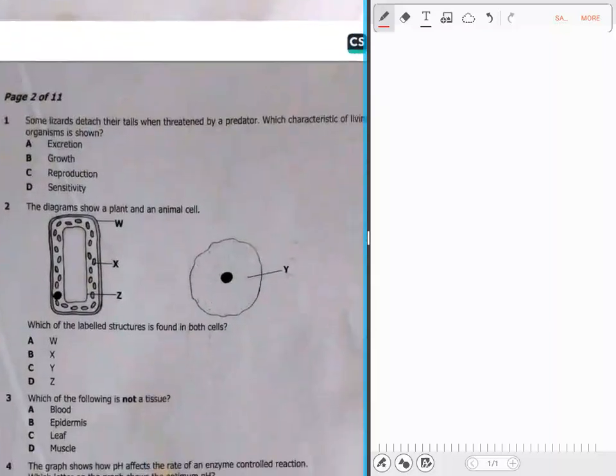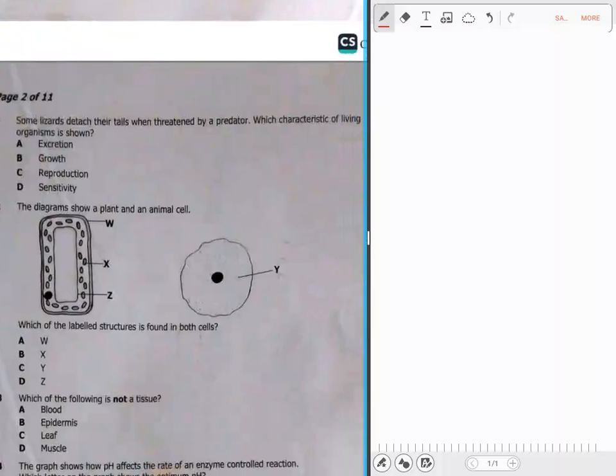Our first question says some lizards detach their tails when they're threatened by a predator. Which characteristics of a living organism is shown? When you get threatened by someone, they detach their tail and their tail remains around. That is sensitivity, that is irritability. Question 1 is D.